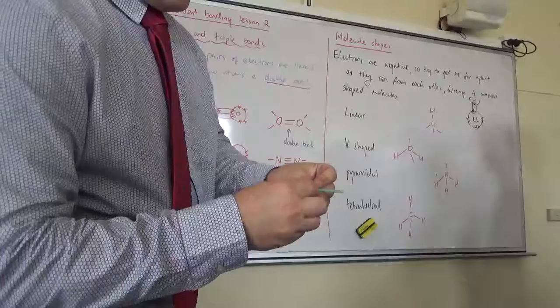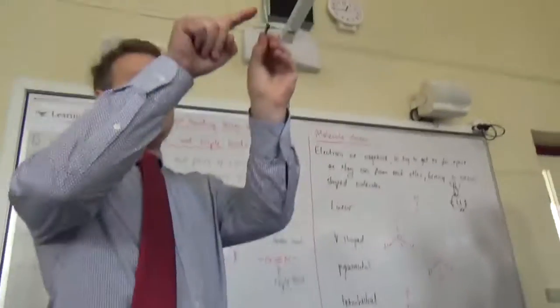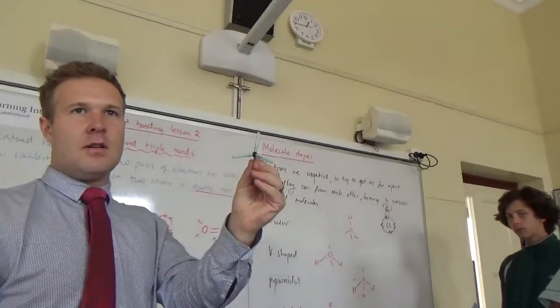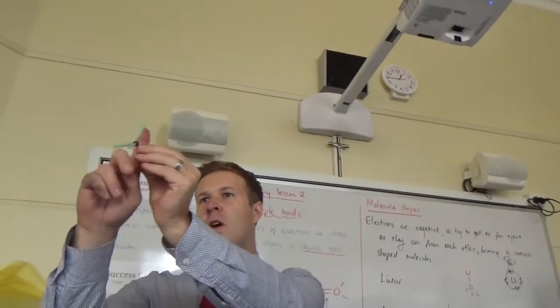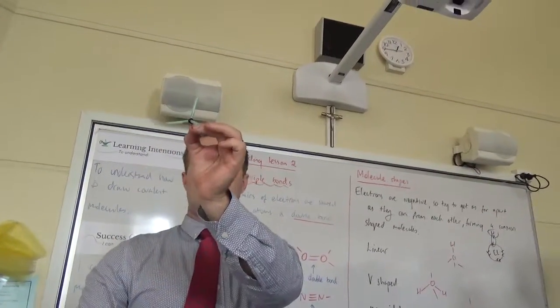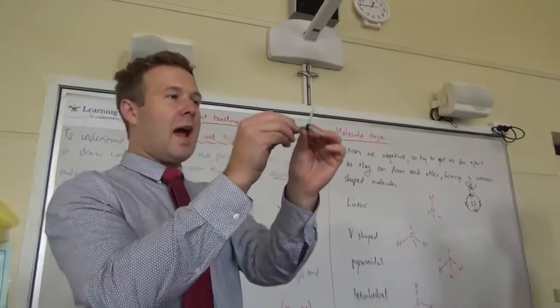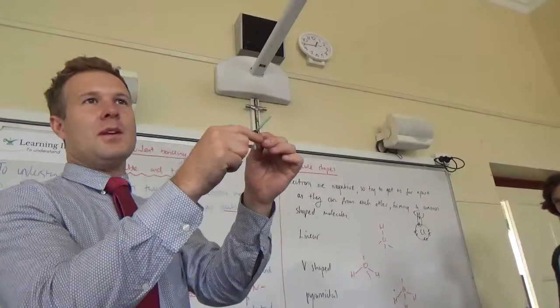Right. Now, the shape that this is taking on, what angle do you reckon that is between those two? 90 would be there, wouldn't it? 110. Yeah, it is. Very close, 109. So, the angle between each of these is exactly 109.5 degrees.